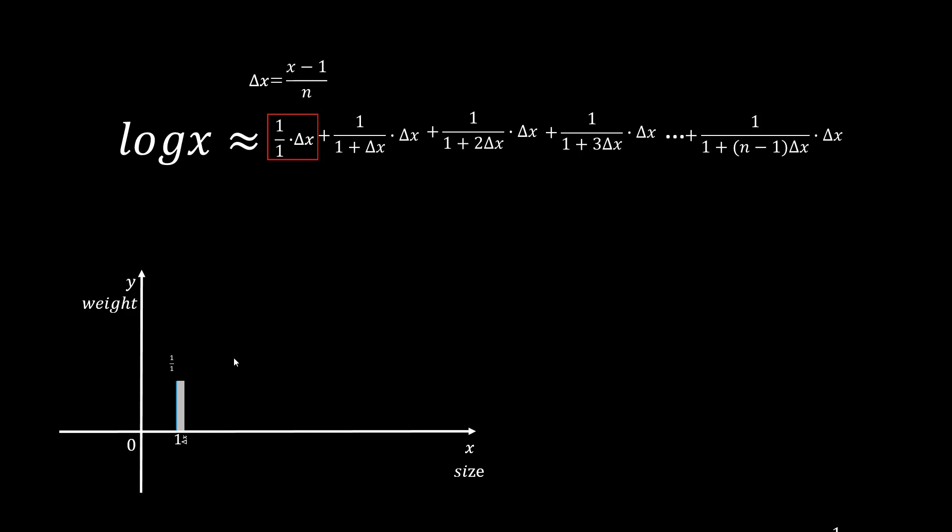After the growth, it becomes slightly bigger. At this size, the weight is 1 over this new size. Then with the same width, this area represents the new product. At the bigger size, the weight is the inverse of it. Then another area for the product. So each product can be represented by these rectangular areas with decreasing height.